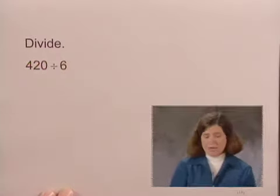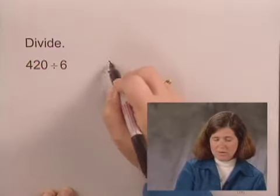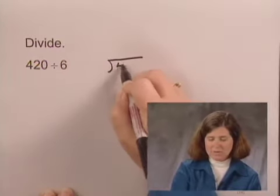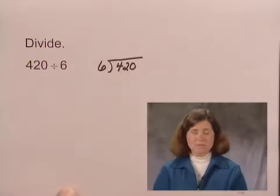We write 420 divided by 6 in the form with a division sign, with 420, the dividend, under the division sign, and 6, the divisor, outside the division sign.